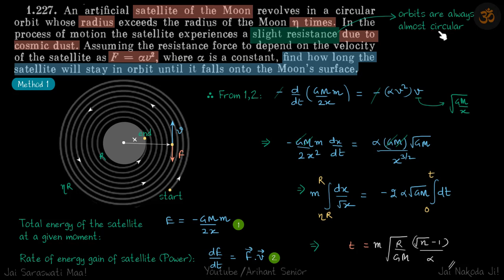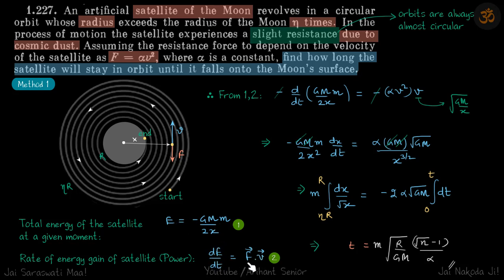With this information we can find the velocity of the satellite when it is at a distance x. We'll solve this problem using two methods. First method: the work-power-energy method. The total energy of a satellite traveling in a circular orbit is given as minus GMm divided by 2x, which includes both potential and kinetic energy. Power, which is the energy gained, is F dot v = dE/dt. Here F is alpha v-squared and velocity is root(GM/x).